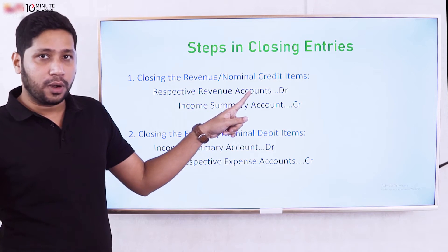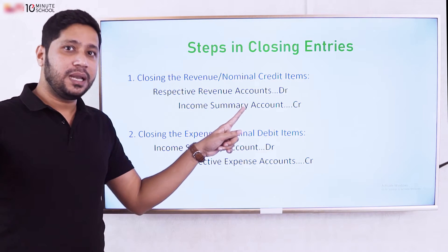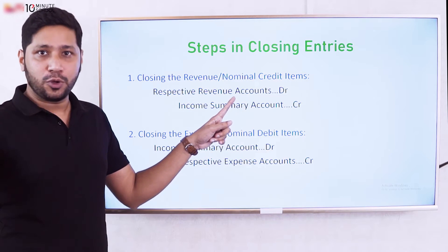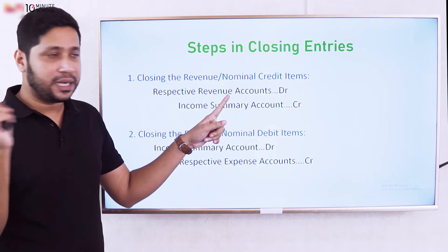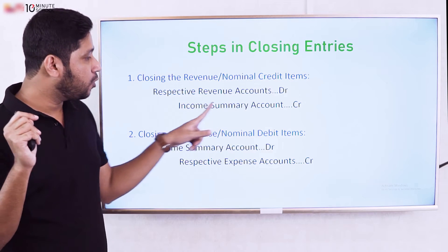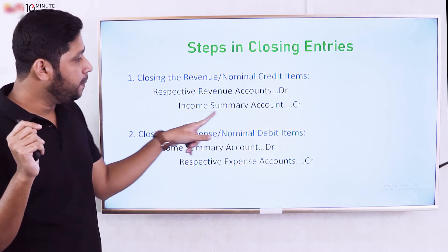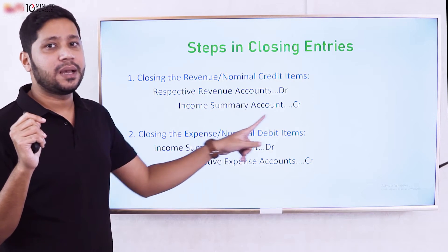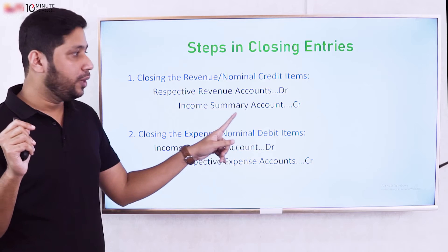When we debit the revenue accounts to close them, we transfer the balance to the income summary. So the income summary receives the credit for the total revenue amount.